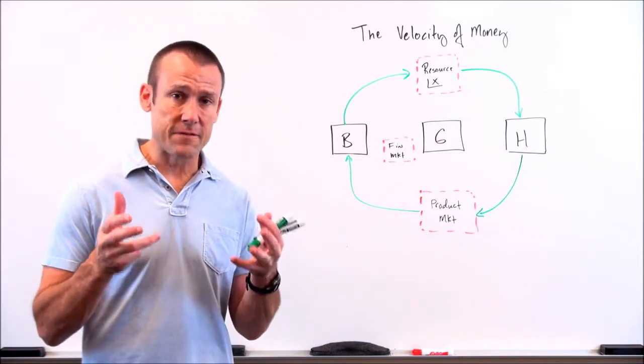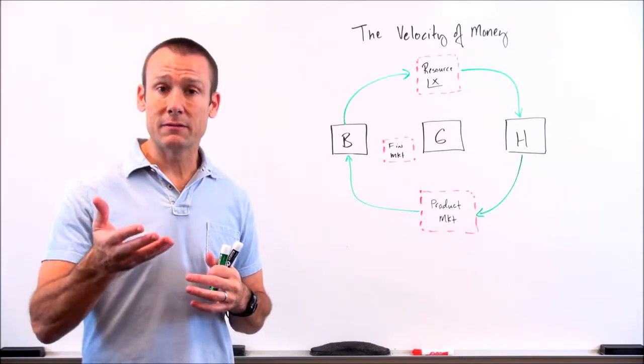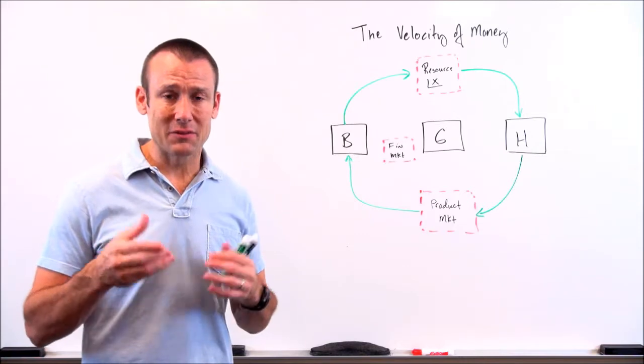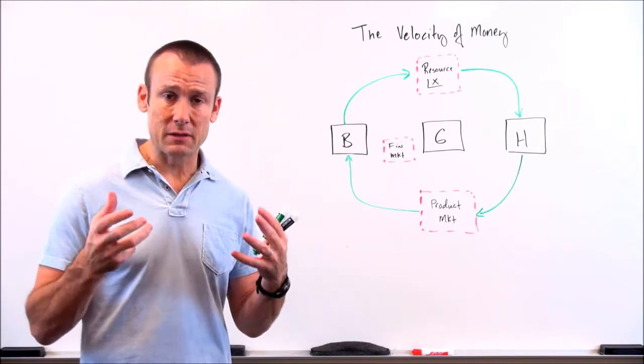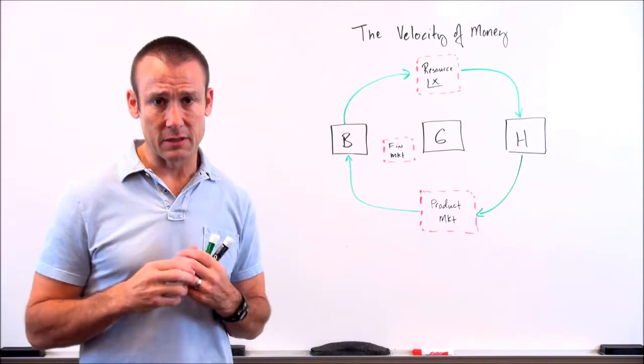The velocity of money, very important for understanding the spending multiplier. Well, what is the velocity of money? Let's just put that out there right from the beginning. It is the number of times the average dollar gets spent in a year. It's the number of times the average dollar gets spent in a year.